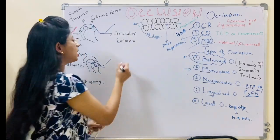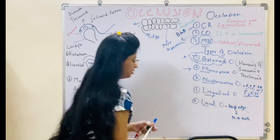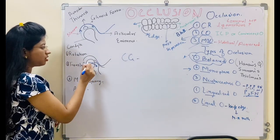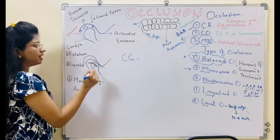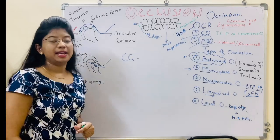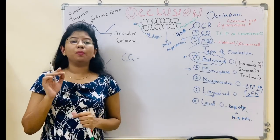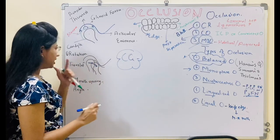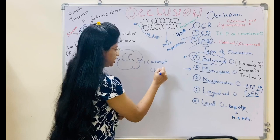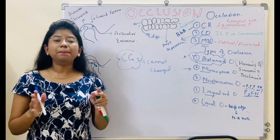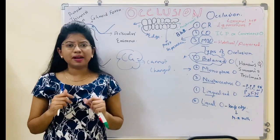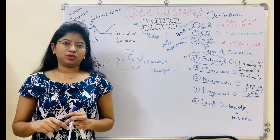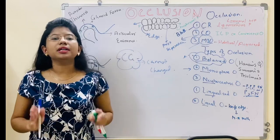The first factor is condylar guidance. This is the angle made by the condyle during translation. You obtain the condylar guidance by taking a protrusive bite of the patient. The condylar guidance cannot be changed — it is fixed in a patient, though it varies from patient to patient. If a patient has a broad mandible the condylar guidance will be different from one with a thin narrow mandible. It is not in the dentist's hands.